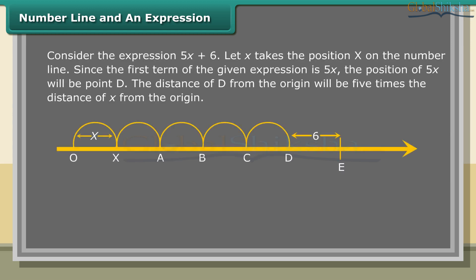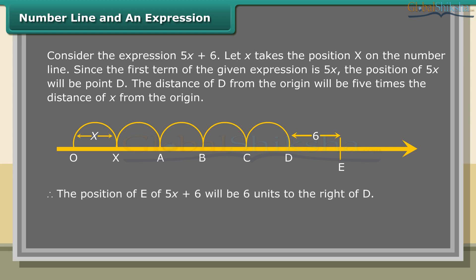Consider the expression 5x plus 6. Let x take the position x on the number line. Since the first term of the given expression is 5x, the position of 5x will be point D. The distance of D from the origin will be 5 times the distance of x from the origin. Therefore, the position E of 5x plus 6 will be 6 units to the right of D.